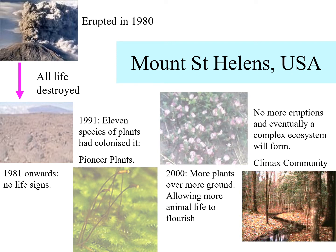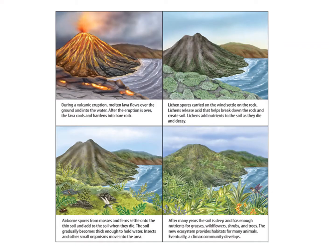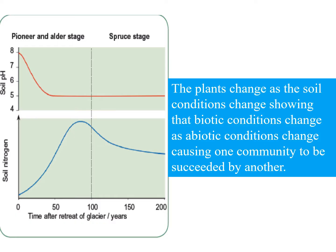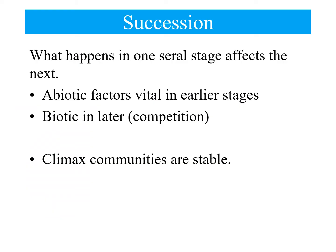That climax community will probably be woodland because the volcanic material makes the soil rich. As you can see, the plants change as soil conditions change, showing the link between changing biotic and abiotic conditions. Initially there's no soil and very poor abiotic conditions — poor nitrogen. Pioneer plants come along and insert nitrogen into the soil through nitrogen fixation, because it's not there initially. This increases soil quality, leading to the spruce stage where bigger plants start to appear. Each seral stage affects the next.